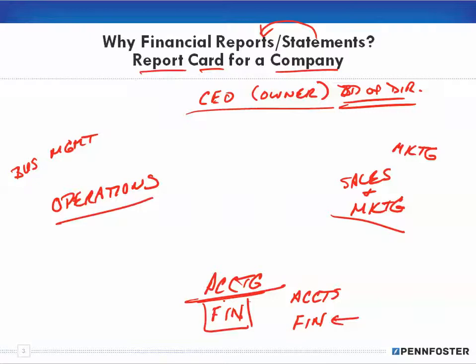Here's the thing: the CEO, owner, or board of directors has some knowledge, but they're not specializing in business management, marketing, or accounting. Why? Because they're running the business. Think about it — to get degrees in management, marketing, and accounting would take you a good 10 to 12 years. They're running a business; they're not there to collect degrees. That's why they hire people who have those specialties.